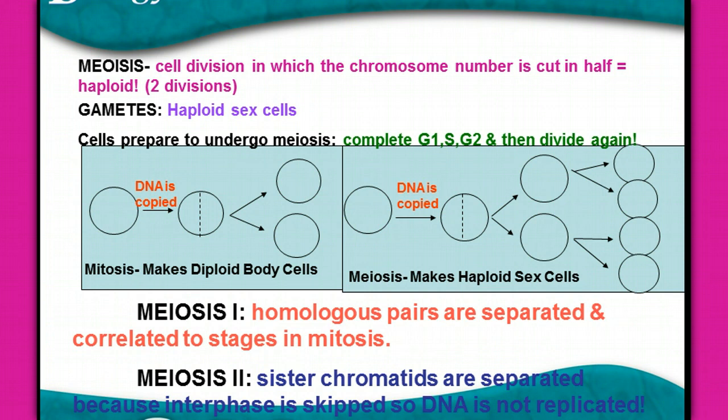That is going to take us from the diploid number — 46 chromosomes in a normal body cell — to haploid, to 23. This process involves two nuclear divisions, meaning the nucleus is going to divide twice, the cell is going to divide twice. This is to produce the gametes, and these are the haploid sex cells.